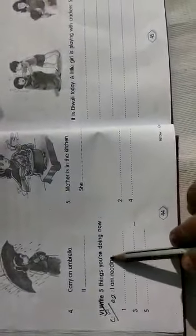Now, this is question number 6. Also your class work. You have to do it in your book only. Using pencil. Write 5 things you are doing now. You have to write here.